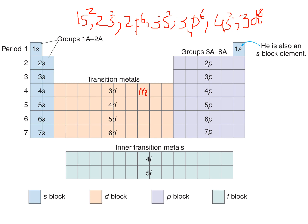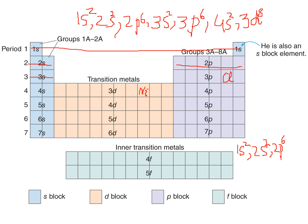Let's take another example: chlorine. Chlorine is located in the third period. Its electronic configuration starts with 1s², then 2s², 2p⁶, and 3s². Chlorine is in the p block of the third period at position five, so it is 3p⁵. The full configuration is 1s² 2s² 2p⁶ 3s² 3p⁵.